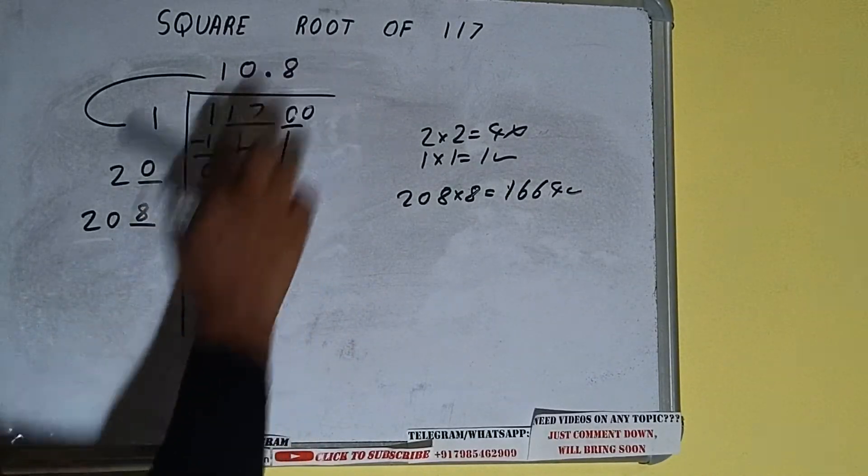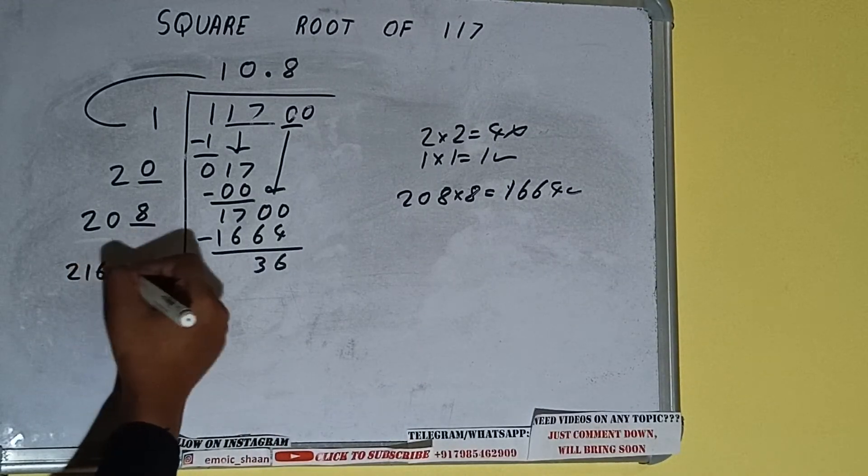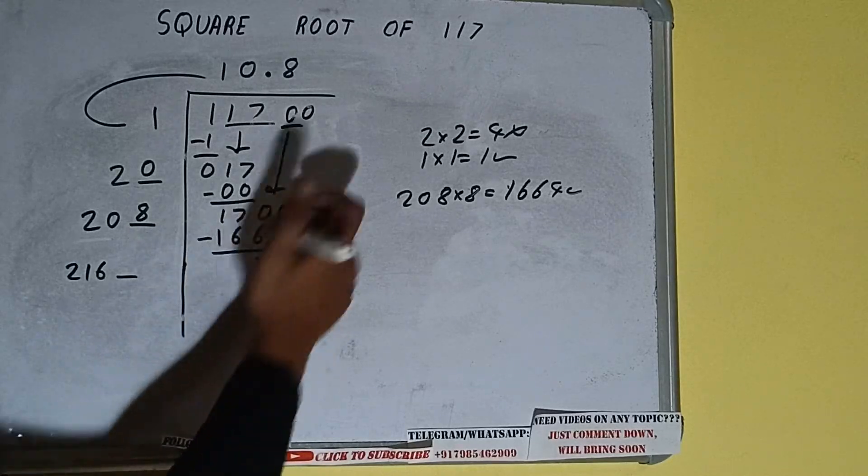Now 208 into 8 we did, so add both. So 208 plus 8 will be 216 and 1 digit extra. And this number we need to make it big.